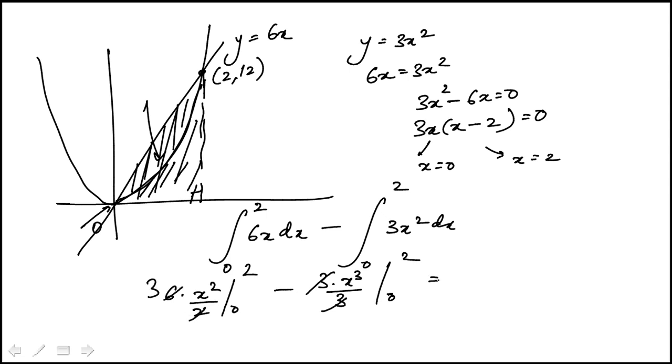So I end up with 3 times 2 squared minus 2 cubed over 3. So you'll notice I'm kind of doing it quick, but that's what I would actually do in the exam. So the answer is 4.